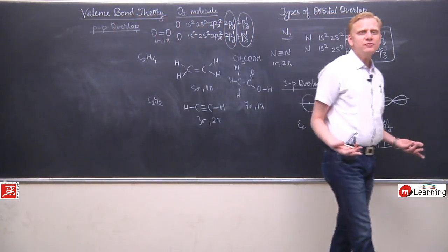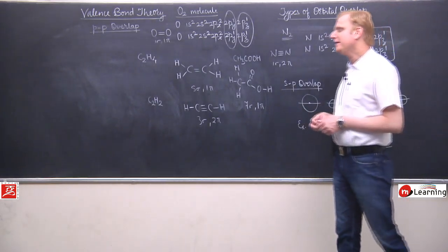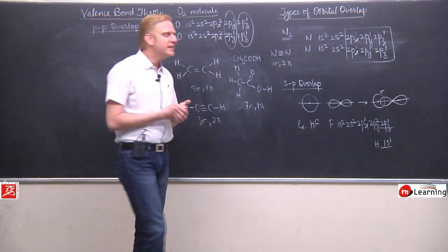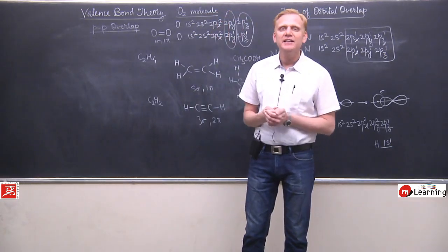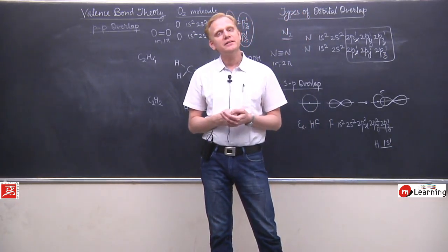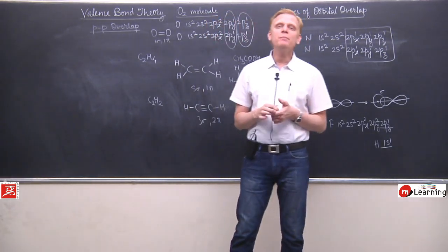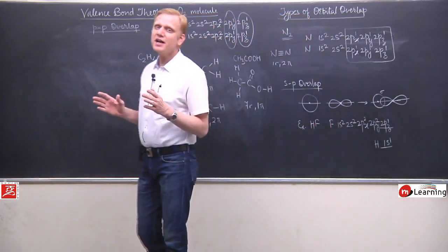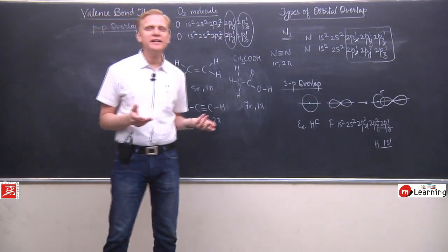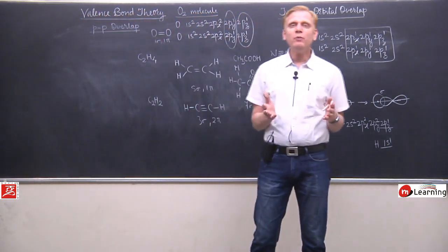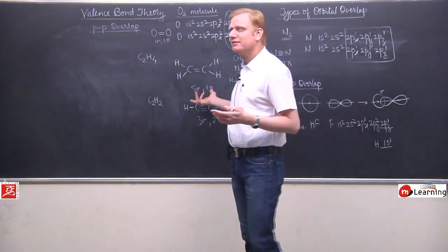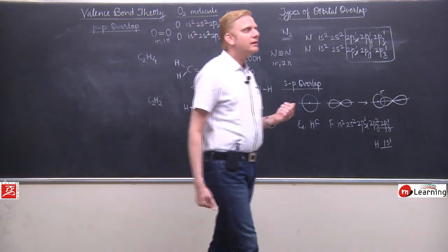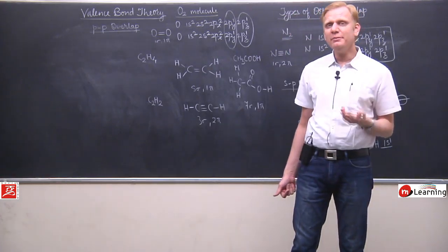You can take any kind of examples — questions lagatar poochhe ja rahe hain. Sigma or pi bond? Hameh lagta hai ki it's a very simple thing — sigma or pi bonds count karna, determine karna. But aisi chezon mein bhi mistakes hoti hain, jahan hameh careful rehna hai.